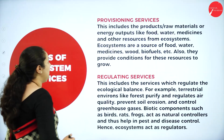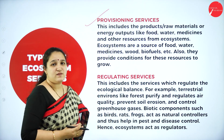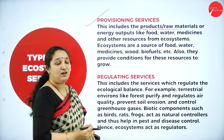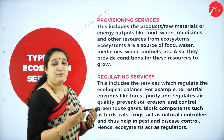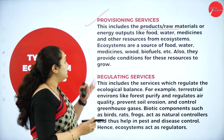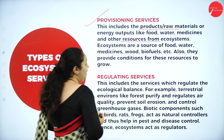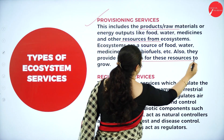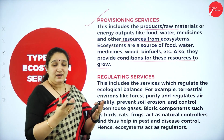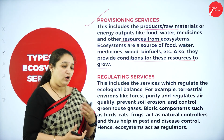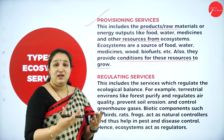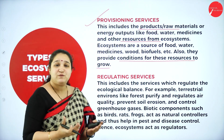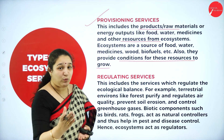The first is provisioning services. Provisioning services include all the products — the raw materials or the energy output — that we use from the ecosystem, like food, water, medicines, and other resources. Also biofuels, and they provide conditions for resources to grow. In different ecosystems, different types of food can be grown. The ecosystem provides us water and also provides the place for our life.